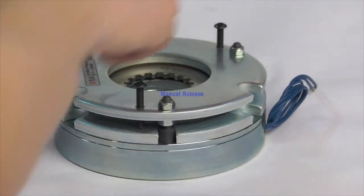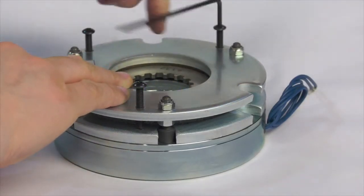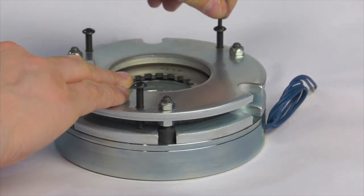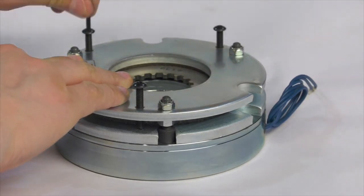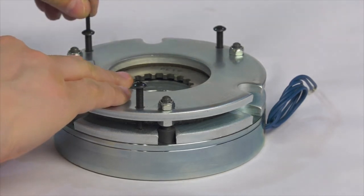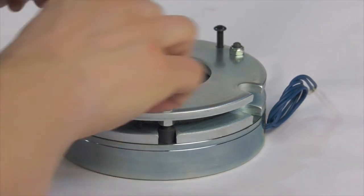Manual release. For larger models of RNBZ, RNB, SNB and MNB brakes, the cover plate contains three tapped holes. Brakes can be manually released by inserting the appropriate metric screw into the three holes.